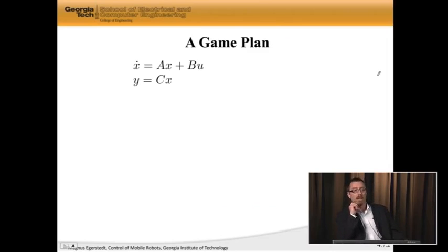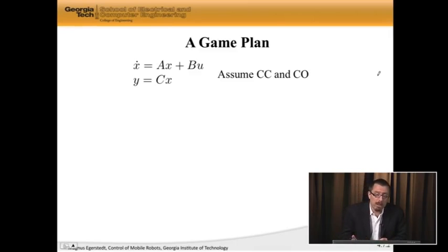Here's the game plan. I have x dot is Ax plus Bu, y is Cx. This is a standard linear time invariant system. Now I'm going to assume that this system is both completely controllable and completely observable. If it's not, then to be completely frank, we're toast. What that means is we need to go and buy new sensors, which is fancy speak for saying get a new C matrix, or we need to buy more actuators, which means get a better B matrix. So, let's assume that we have complete controllability and complete observability.